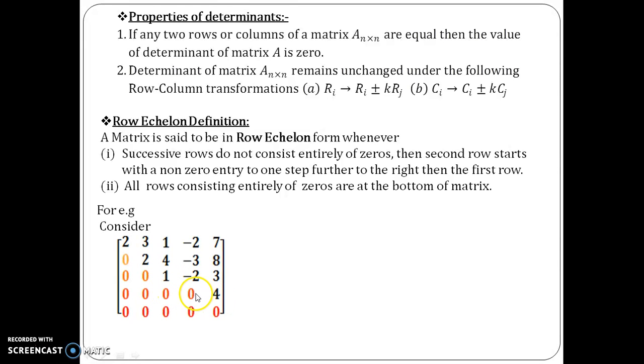So, this is the meaning of this line, condition number 1. And all rows consisting entirely of zeros are at the bottom. That means, if you see these zeros, it is at the bottom.